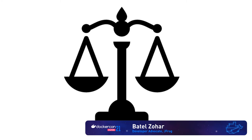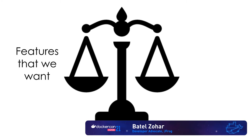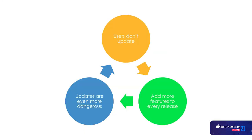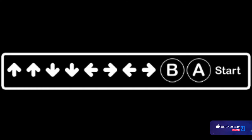The feature we really want has to be weighed against the acceptance test cost. The problem is that we create another cycle: we want lots of features, acceptance test costs pile up, users want updates, so vendors add more features to each release. Now updates are even more risky and we have tons of features we want to test.